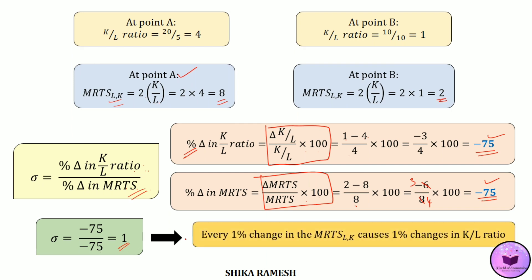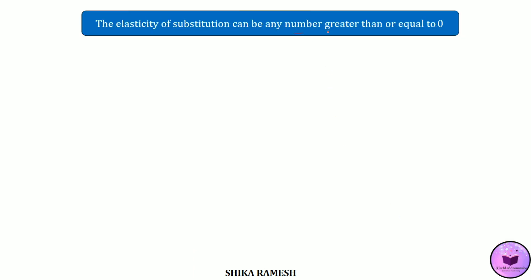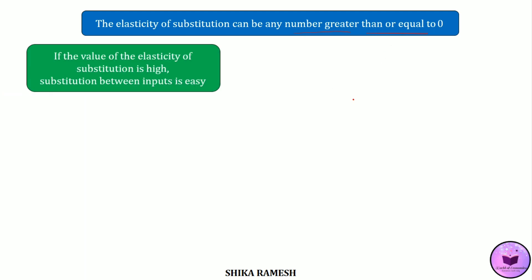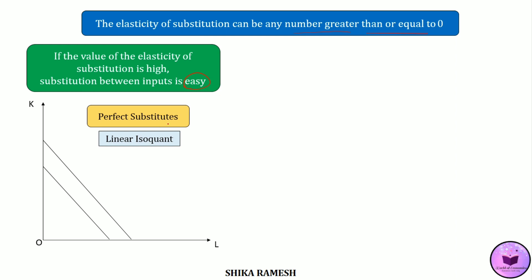This value shows that every 1% change in the marginal rate of technical substitution causes a 1% change in the K/L ratio as well — this is nothing but constant returns to scale. The elasticity of substitution can be any number greater than or equal to 0. If the value of elasticity of substitution is high, it means that the substitution between factor inputs is easy. Such a case can be identified for perfect substitutes, wherein we get a linear isoquant.